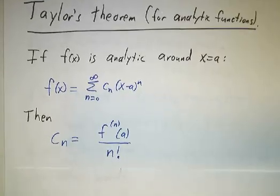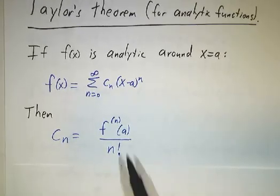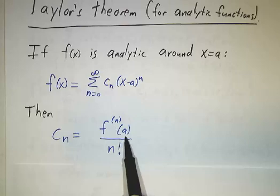then the coefficients are given by a simple formula. You take the nth derivative of your original function, evaluate it at a, and divide by n factorial.